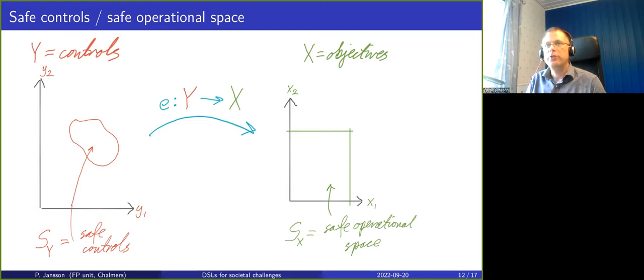Theoretically we could just apply this inverse of e to the whole set here and we would get the safe control space, those controls which when running through e will end up in this space.